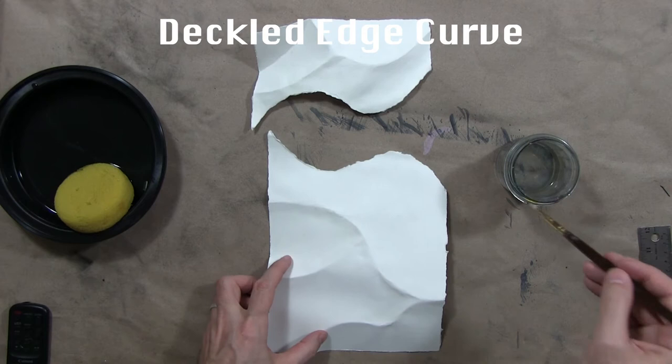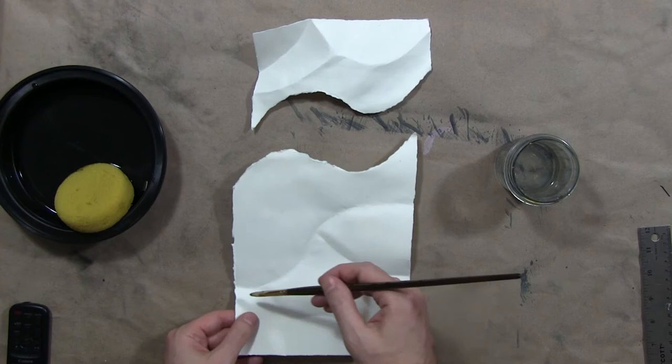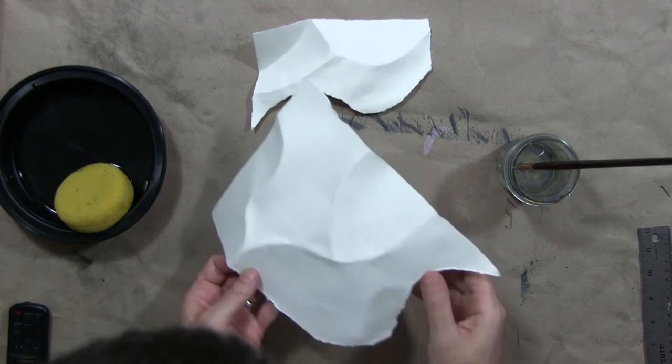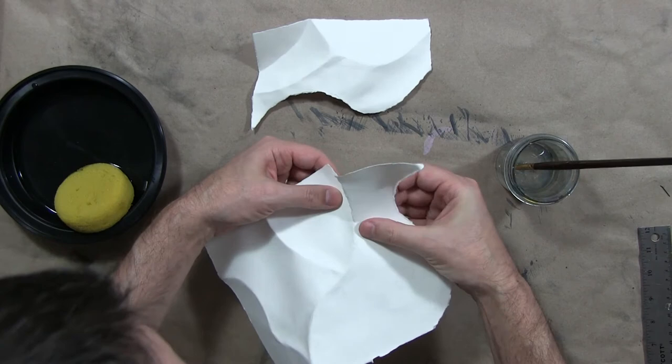Let's say we wanted to tear some curved deckled edges, sort of like the outside edge is. So I'm taking a paintbrush that doesn't hold a lot of water, and I'm just wetting along that curved fold, and I let it soak in for a minute.